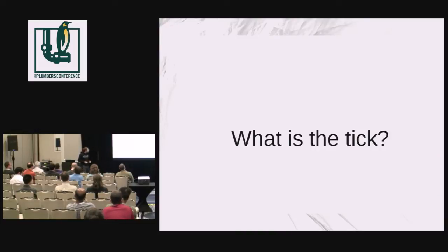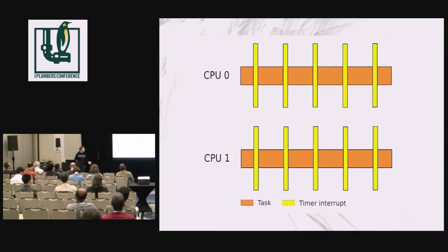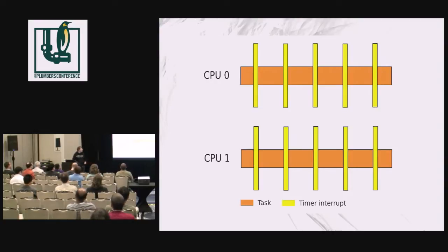I'm going to try to remind you what the tick is about. It's a periodic interrupt that happens from 100 to 1,000 times per second. It depends on the architecture — some architectures may support other ranges. This is a per-CPU event.